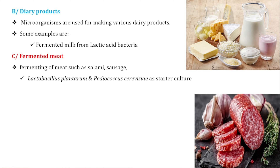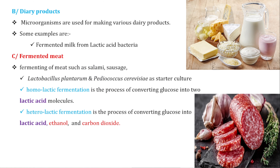It produces bacteria in the plant. A starter culture is used in the fermentation process. Starter culture is defined as the microorganism that is used to initiate or stimulate the fermentation process. The fermentation process involves bacteria, fungi, and other microorganisms in the starter culture. In this aspect, fermented meat undergoes fermentation.